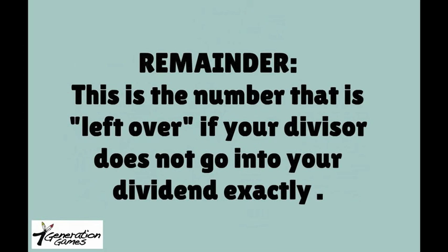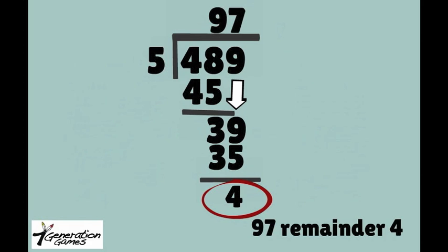With some problems, you will have a remainder. This is the number that is left over if your divisor does not go into your dividend exactly. Let's take our problem we just solved, but we'll change 485 to 489. Again, 5 goes into 48 nine times. Bring down the 9 next to the 3. 5 goes into 39 seven times. 39 minus 35 leaves you with 4. In other words, 4 is your remainder.